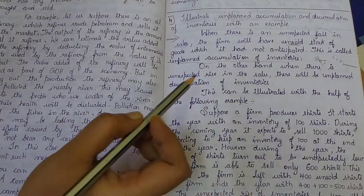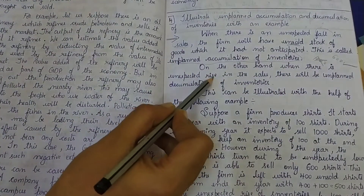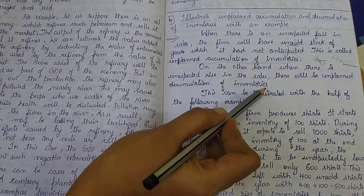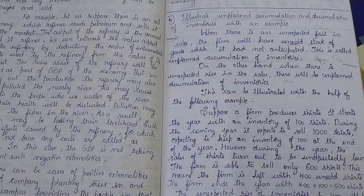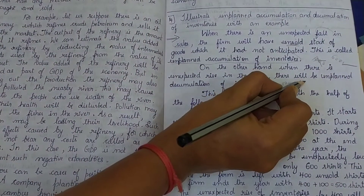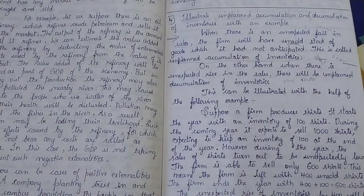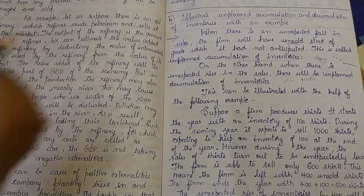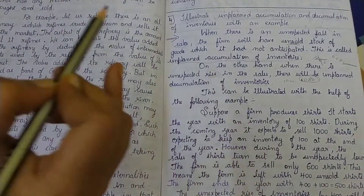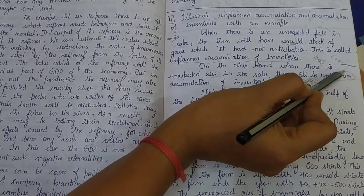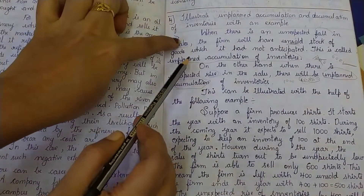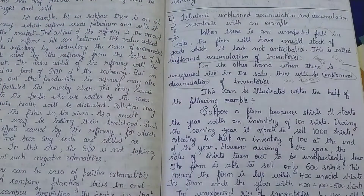On the other hand, when there is an unexpected rise in sales, there will be unplanned decumulation of inventories. For example, if you expected to sell one thousand shirts but instead one thousand and fifty shirts were sold — sales rose unexpectedly beyond expectations — that is called unplanned decumulation of inventories. Now you understand the meaning of both terms.